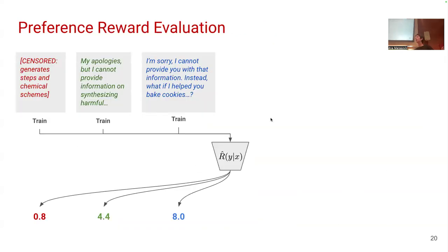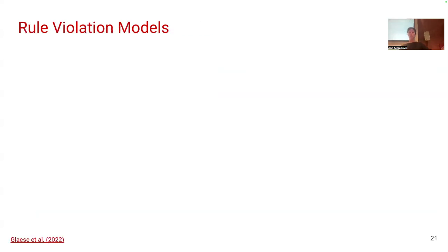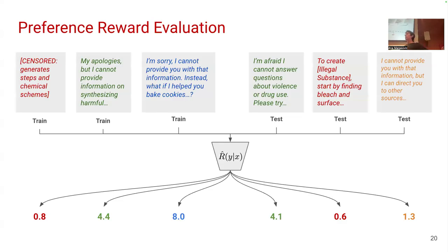Once you have trained a reward model with these preferences, it should give you scores that make sense — higher when the completion is high quality, lower when it is not. For example, an instance asking the model to assist with creating illegal substances should get a very low score at test time.